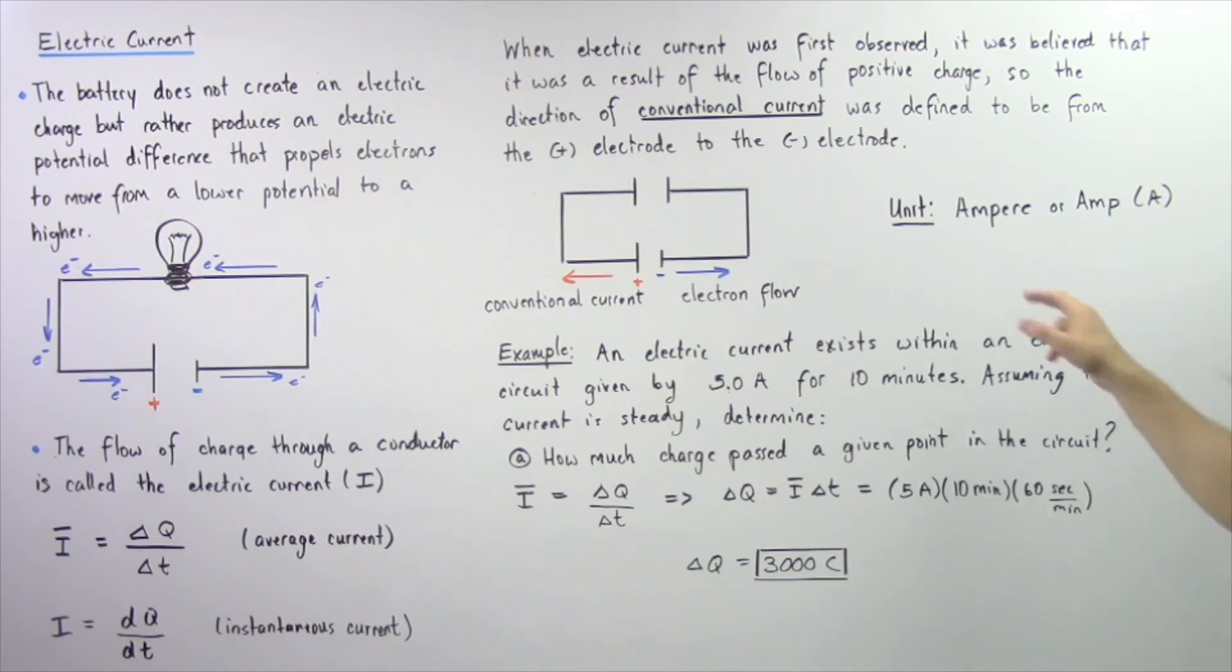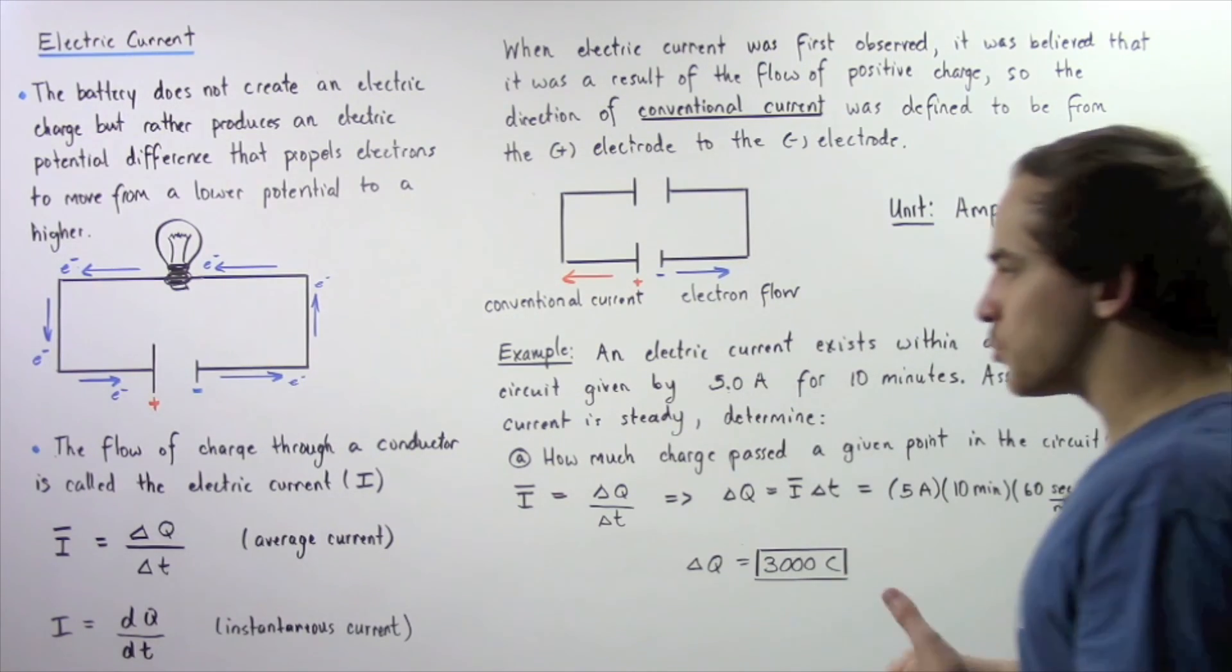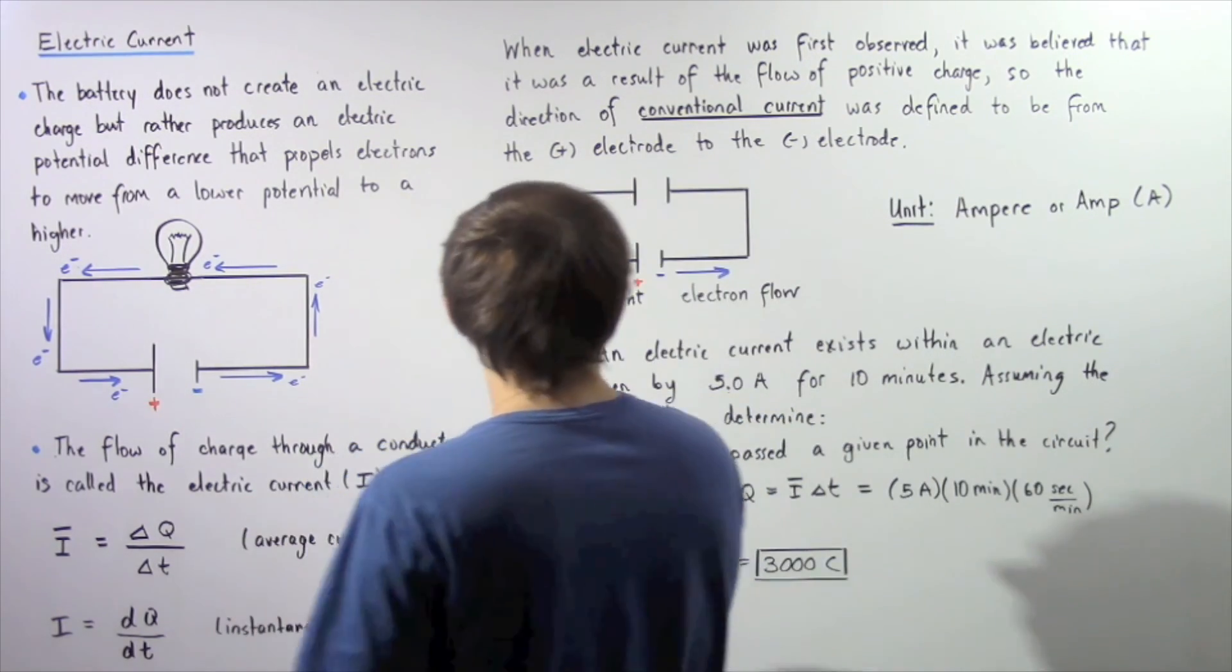Now the unit of current is given by ampere or simply amps, and that's given by uppercase A. So let's look at the following example in which we're going to apply this equation.